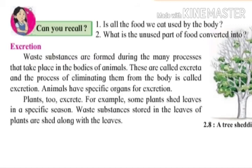Animals have specific organs for excretion. Utsarjan karanen saati pranen madhe nichit ase avayav astat. Plants too excrete; waste substances stored in the leaves of the plants are shed along with the leaves. Kahi vanaspati nchi vishishit ritumat panagal hotat, ani vanaspati cya panan madhe sathavlele utsarga tia panan barovar galyun padat astat.